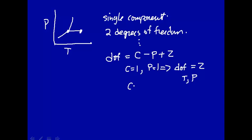If, on the other hand, we have a single component and we want the number of phases to be equal to two — for instance, liquid and solid to coexist — that means the degrees of freedom equals one, and so on.